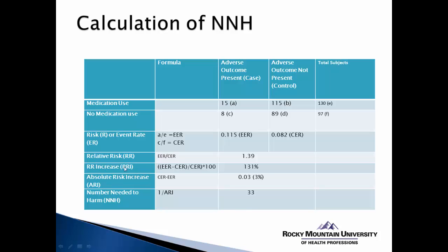The relative risk increase gives us an idea of the actual increase in the adverse event in the experimental group versus the control group. We take the EER value, subtract the CER value, divide that result by the CER value, and multiply by 100. This gives us a relative risk increase of 131% in having the adverse outcome.